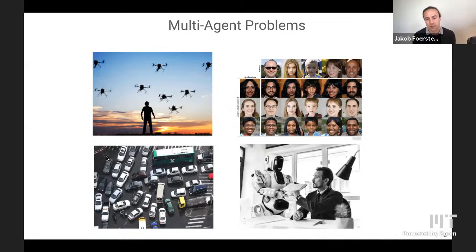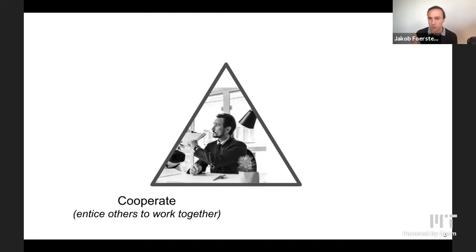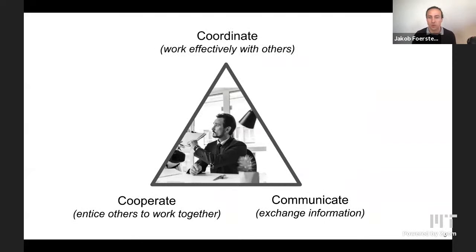Something that's been very close to my heart recently is the setting of human-AI coordination, where we have a human and a robot acting together. In all of these settings, something very core are what I call the three Cs. First, cooperation — the ability to entice others to work together. Second, communication — exchanging information with other agents. Third, coordination — working effectively with others when there's a limited amount of common knowledge between the different parties.